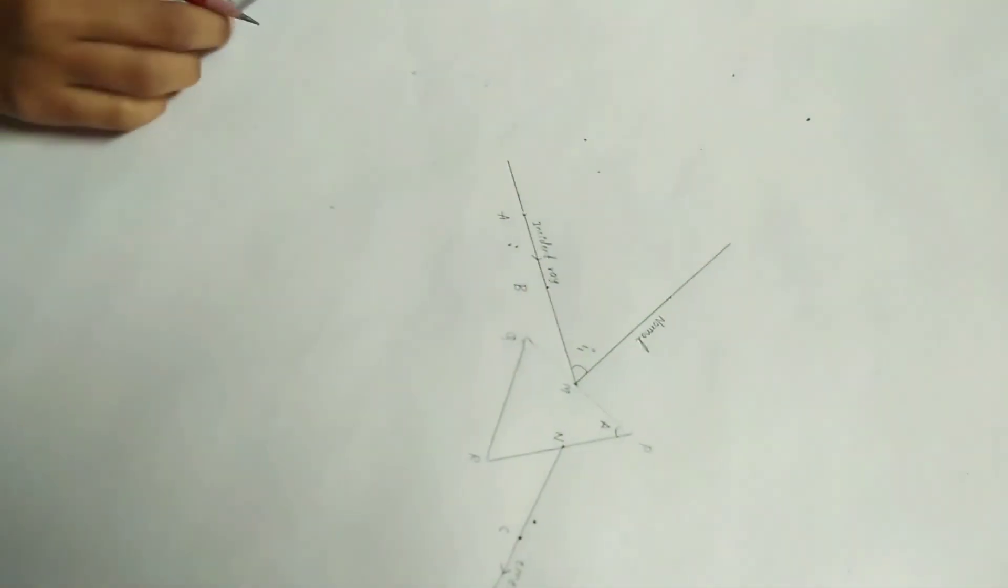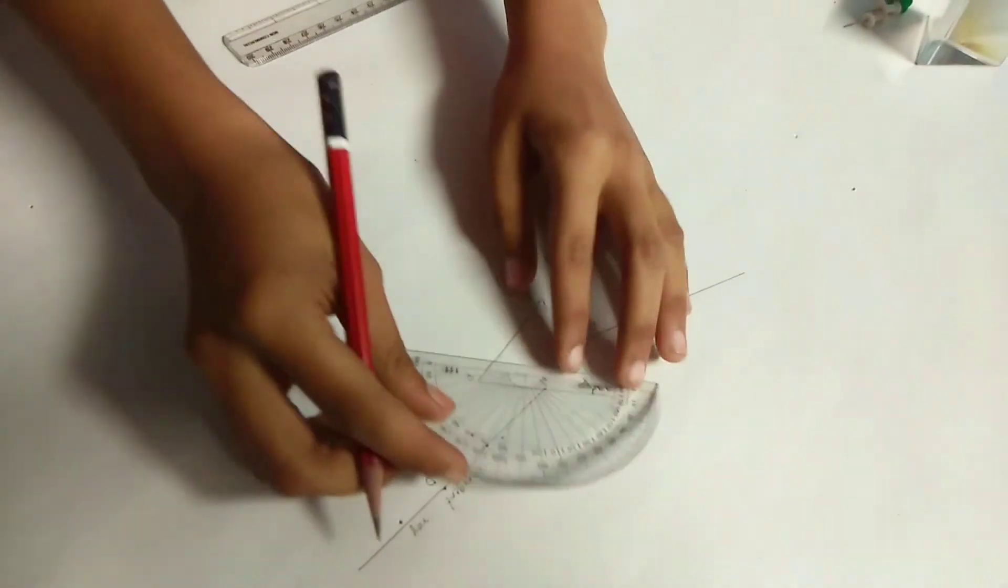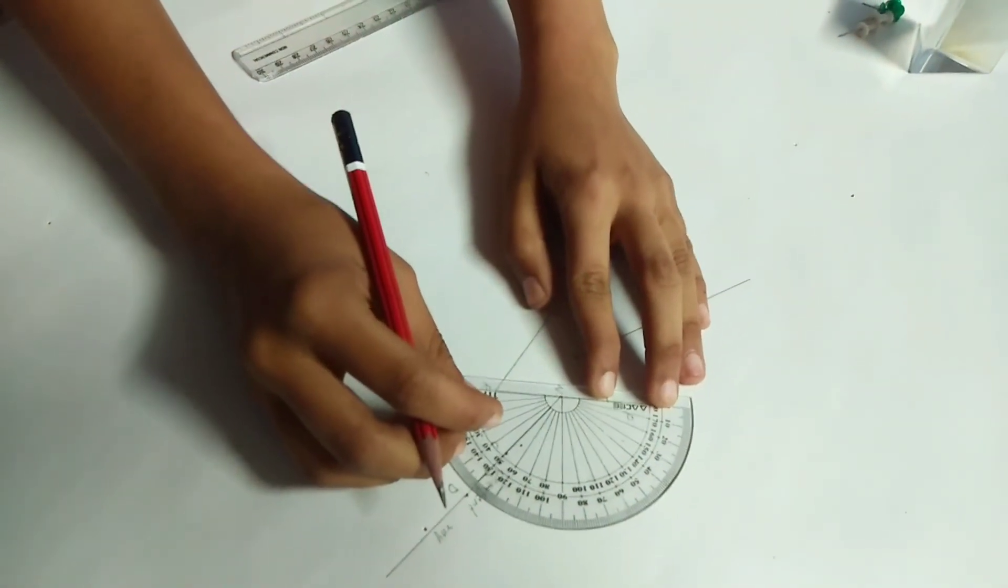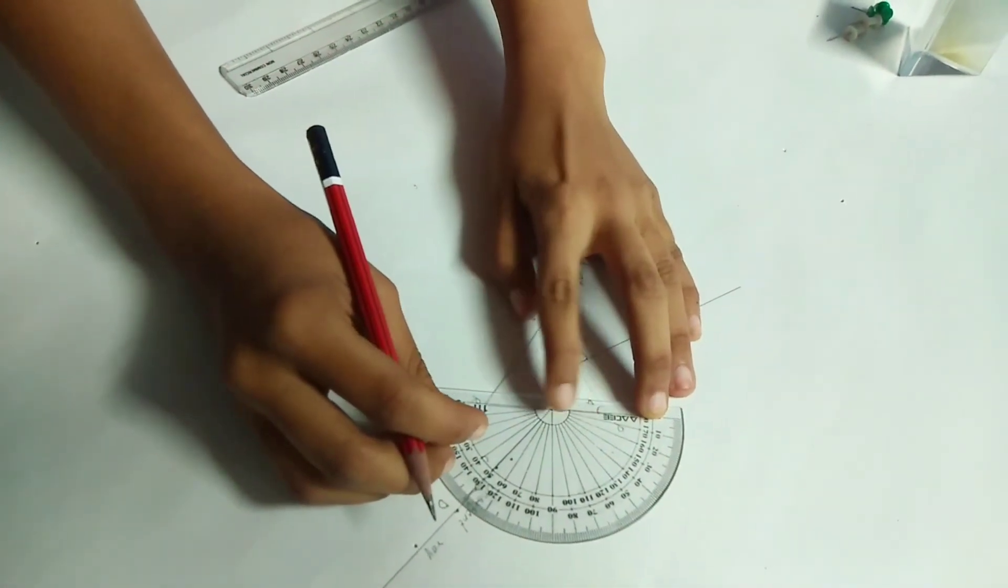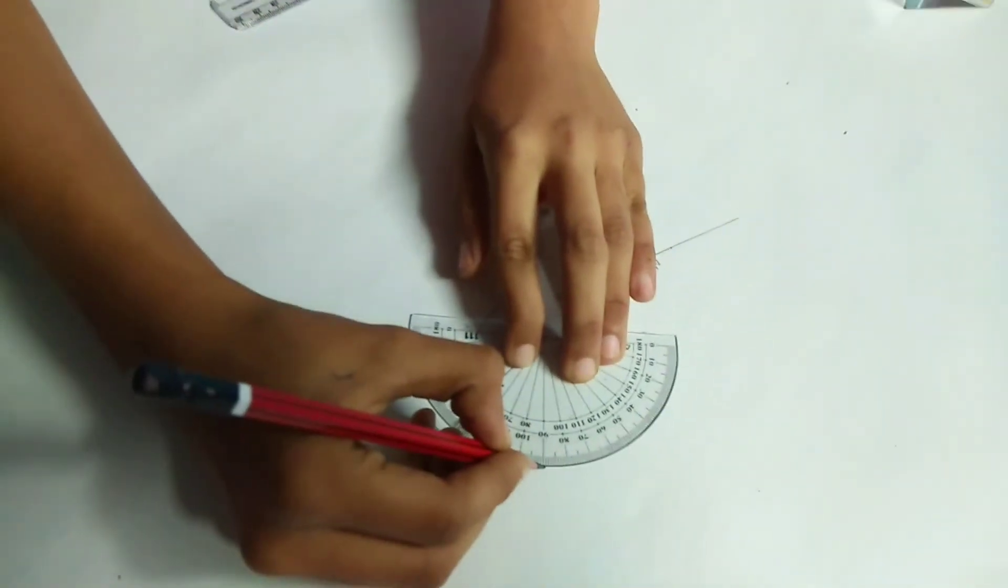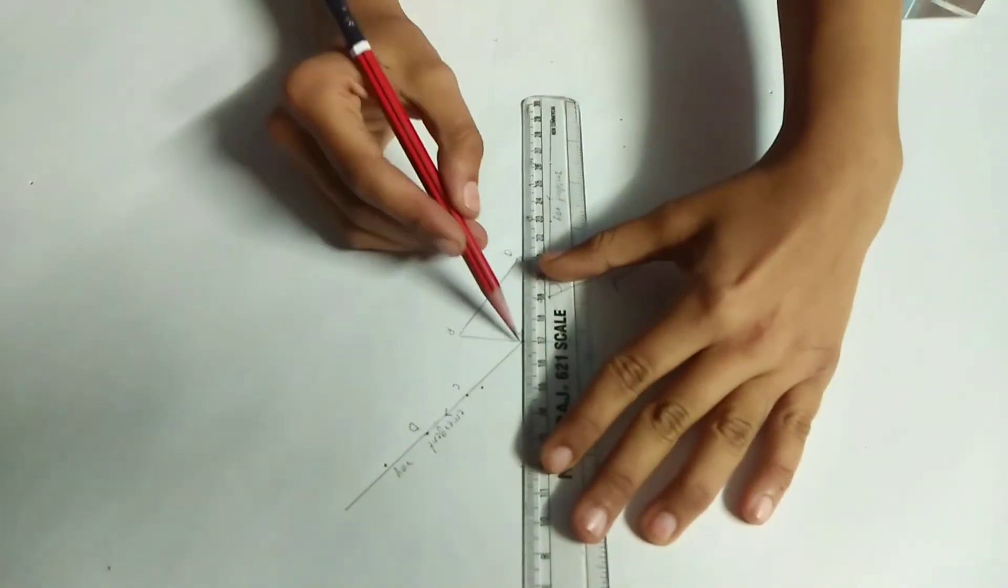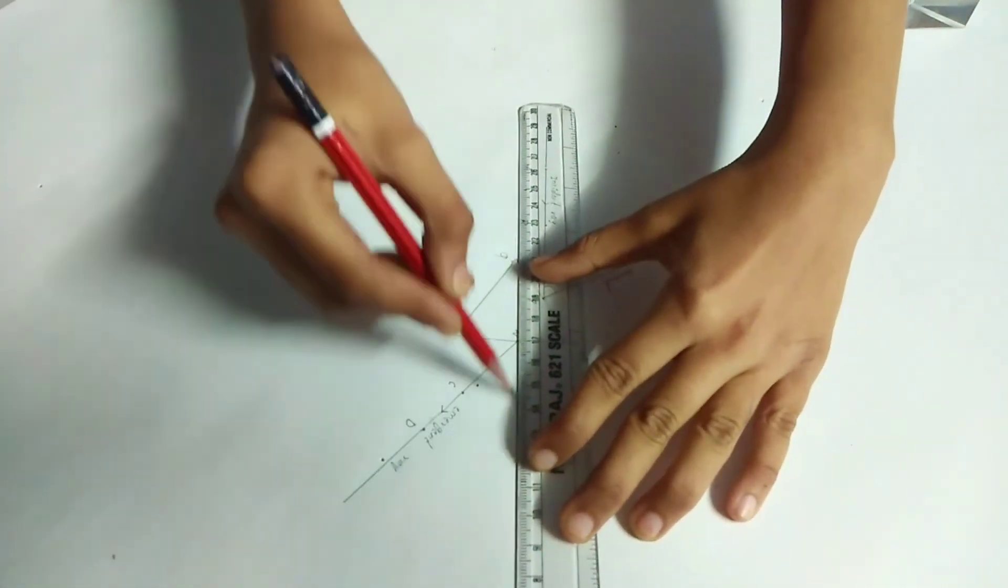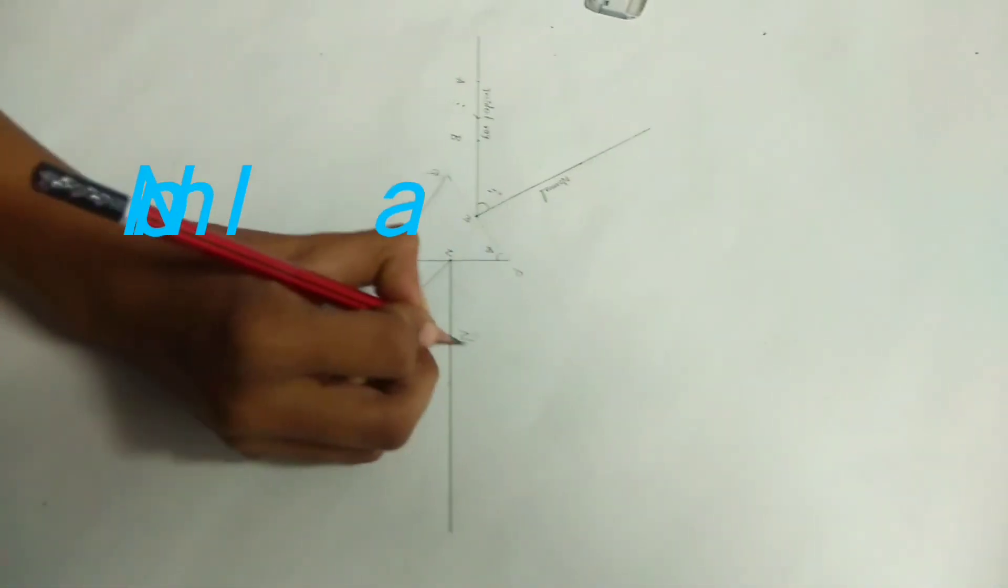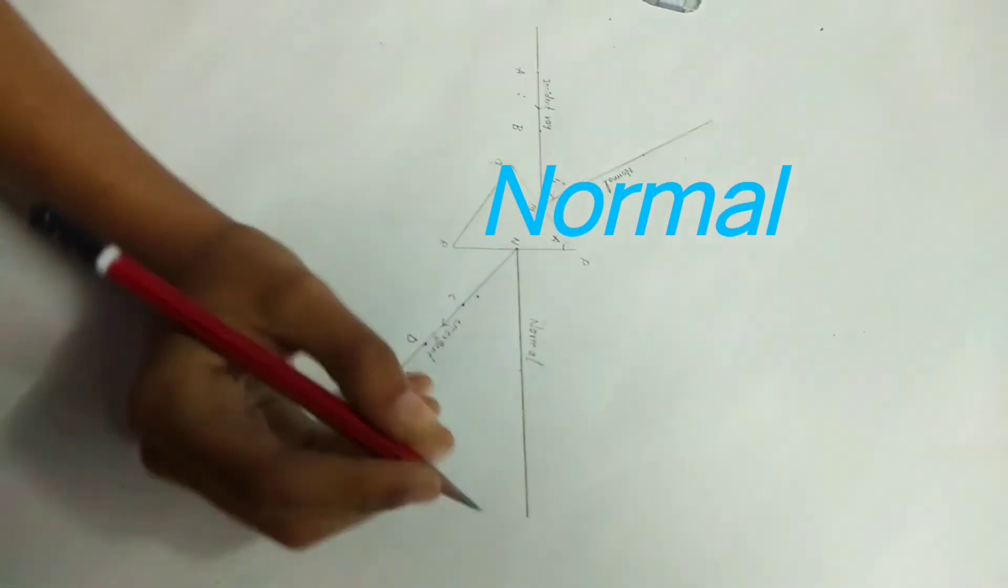Place the protractor at N. Draw a perpendicular which is 90 degrees. This becomes normal to that surface.